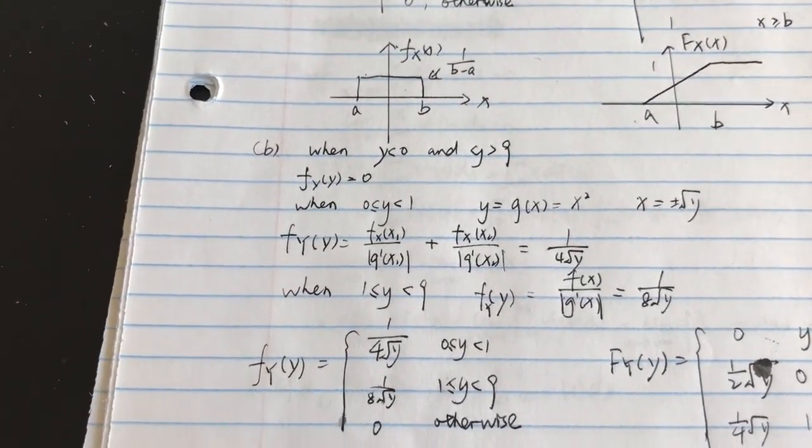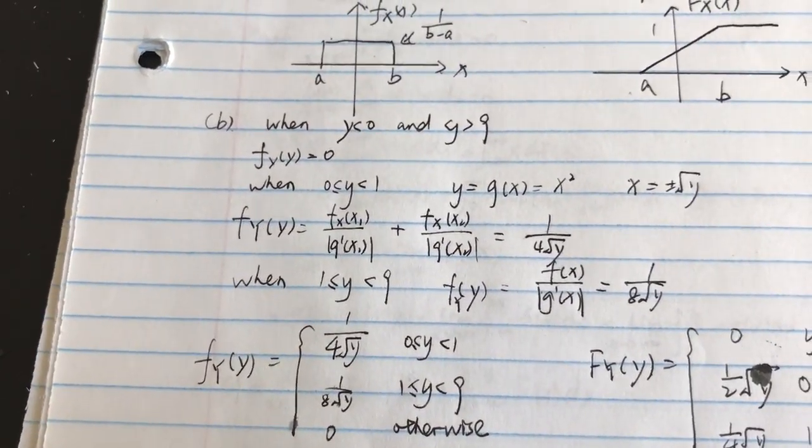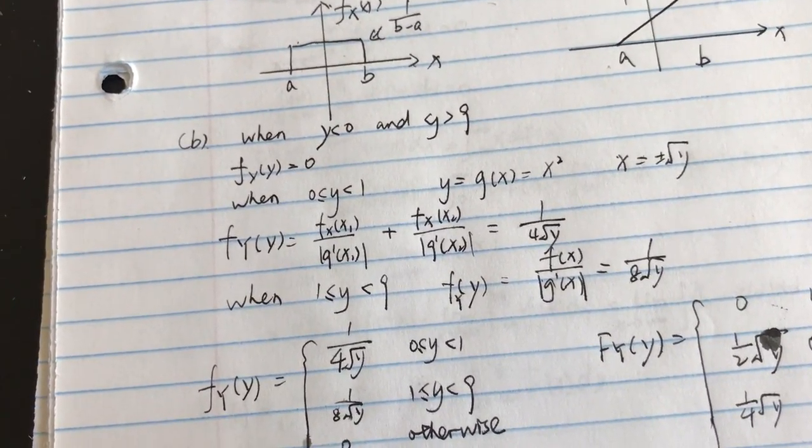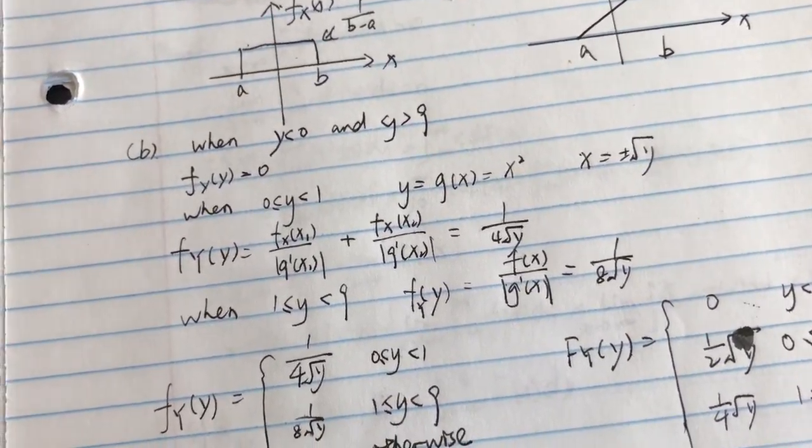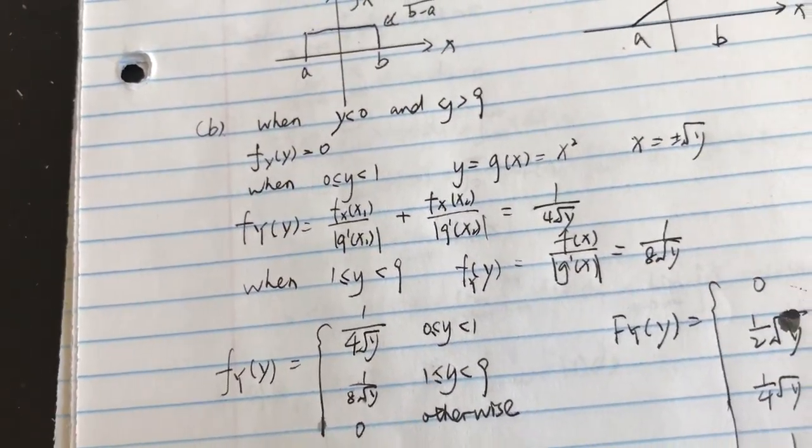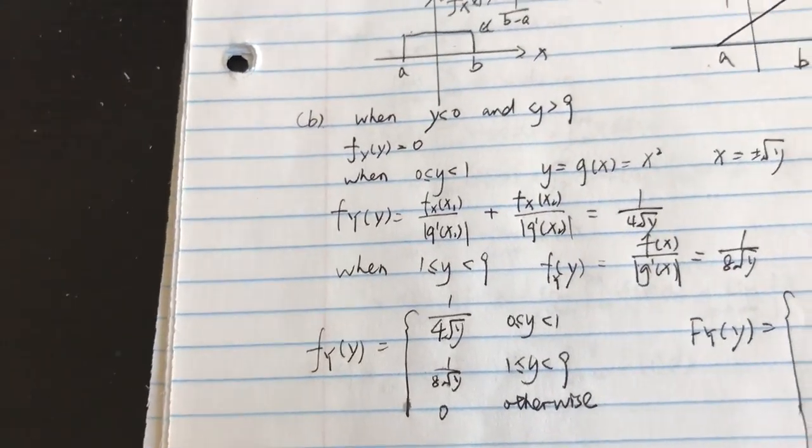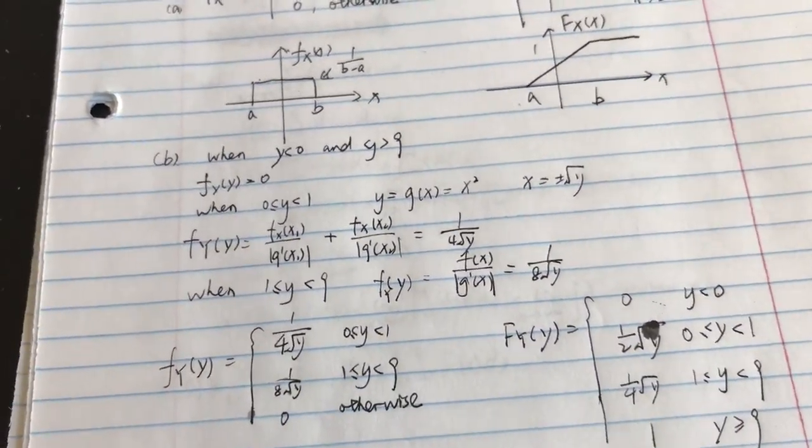And then we can know the result is 1 divided by 4 times the square root of y.